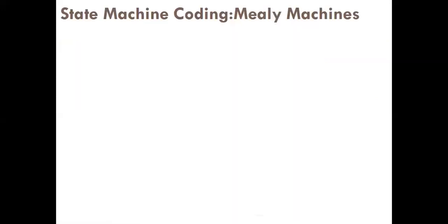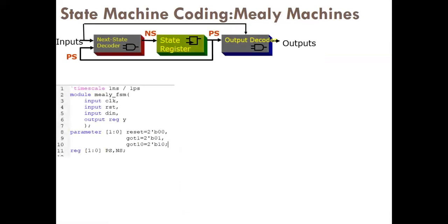Now we are going to write the code. In the Mealy machine, first we write the code for the next state decoder. There are two combinational circuits: one is the next state decoder, another is the output decoder, and the sequential circuit is the state register — which is a flip-flop. The module declaration is: module Mealy_FSM with inputs clock, RST (reset condition), and DIN (the input that determines which state to go to), and output register Y.